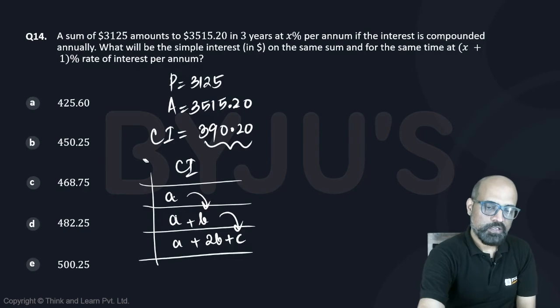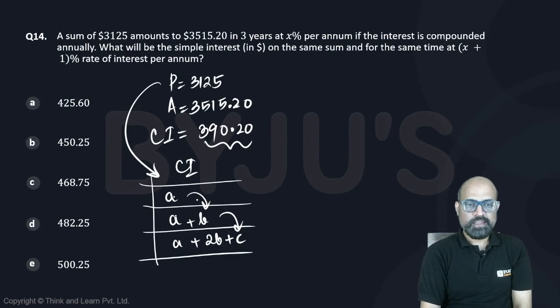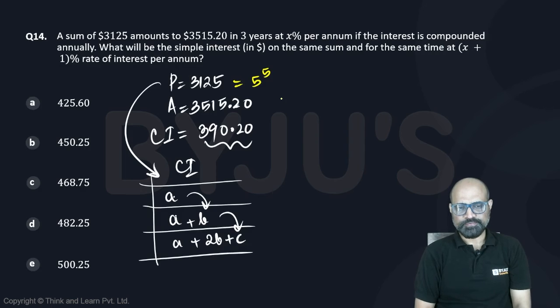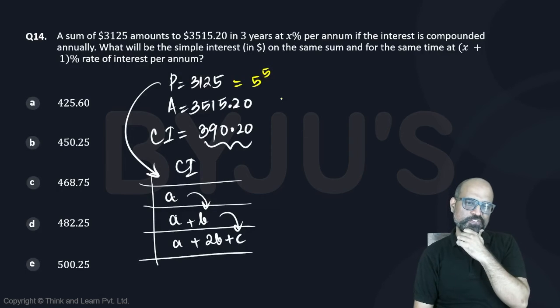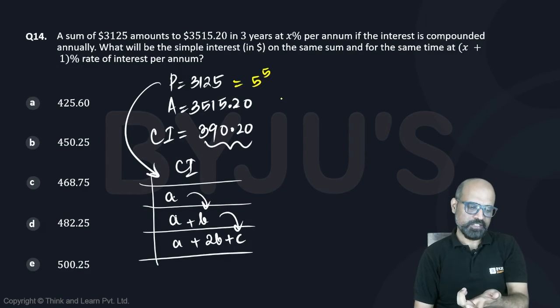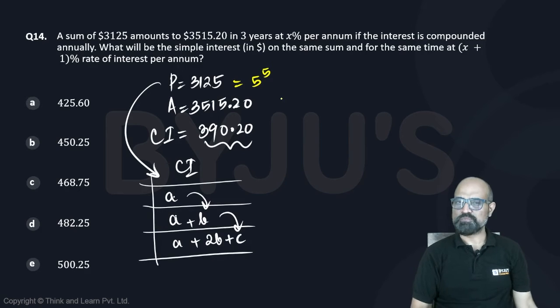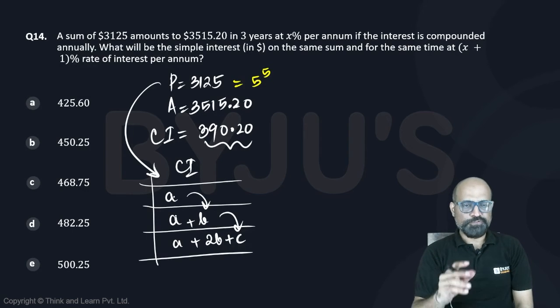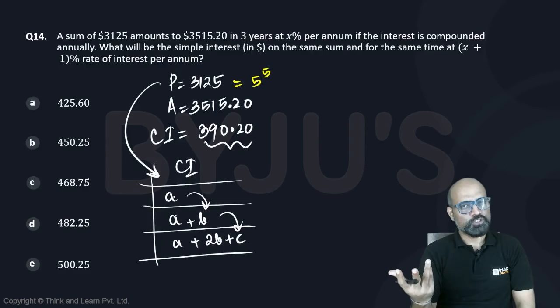3125 is 5 to the power 5, right? So how should we break 390.20? If I take 100, 100, 100 out of 3125, that's a very small percentage, it's 3 percent and it's a difficult value. If principle is in the powers of 5, the interest should also be in the powers of 5.